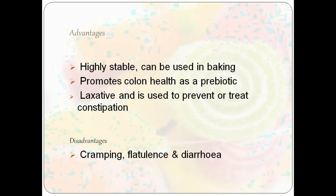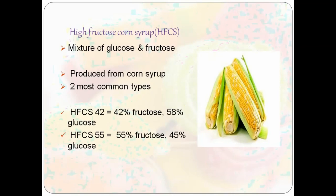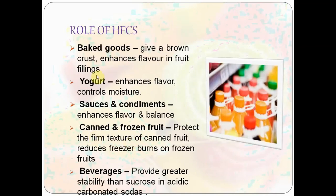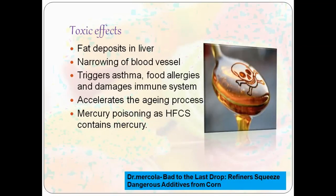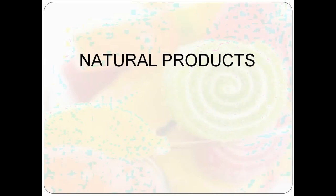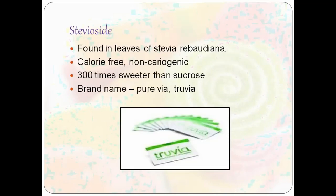High fructose corn syrup is a mixture of glucose and fructose in two types: HFCS-42 (42% fructose) and HFCS-55 (55% fructose). It is used in baked goods, yogurt, sauces, condiments, canned and frozen fruits, and beverages. However, it causes fat deposition in the liver, narrowing of blood vessels, and can trigger asthma and food allergies.